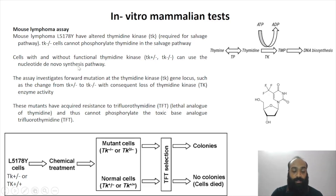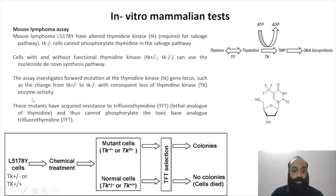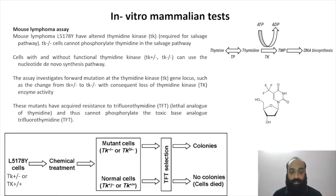If a substance is mutagenic, we will be able to observe the loss of functional thymidine kinase. The mutant cells acquire resistance to a thymidine analog called trifluorothymidine (TFT). TFT resembles thymidine, but if DNA incorporates TFT during replication, the cell dies.